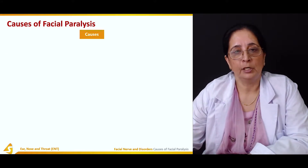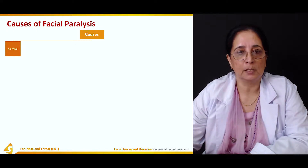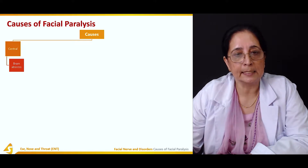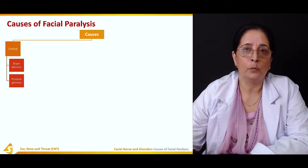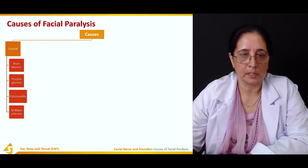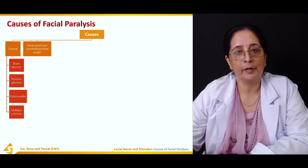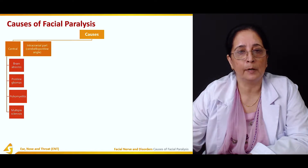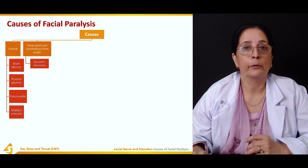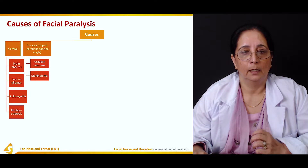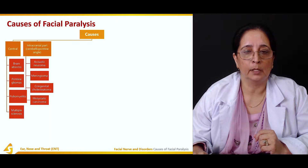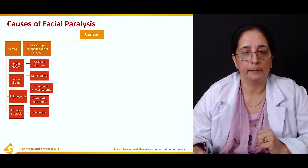Causes of facial paralysis can be central causes, which include brain abscess, pontine gliomas, poliomyelitis, multiple sclerosis, and then the intracranial part, which includes the cerebellopontine angle — acoustic neuroma, meningioma, congenital cholesteatoma, metastatic carcinoma, and meningitis.